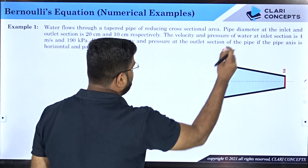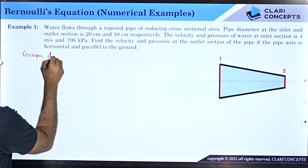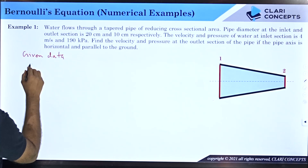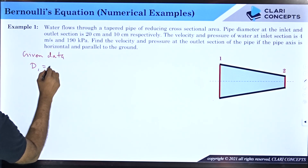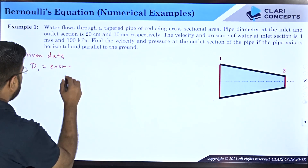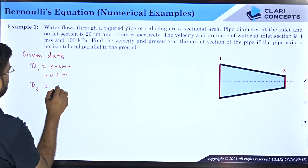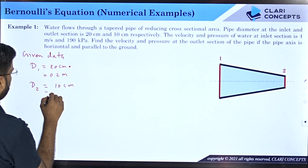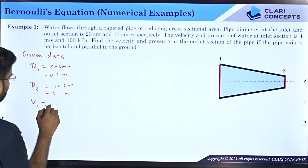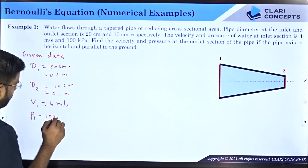Given data: D1 equals 20 centimeters, which is 0.2 meters. D2, the outlet diameter, is 10 centimeters, which is 0.1 meters. Velocity at inlet V1 is 4 meters per second, already in SI units. Pressure at inlet P1 is 190 kilo Pascals.